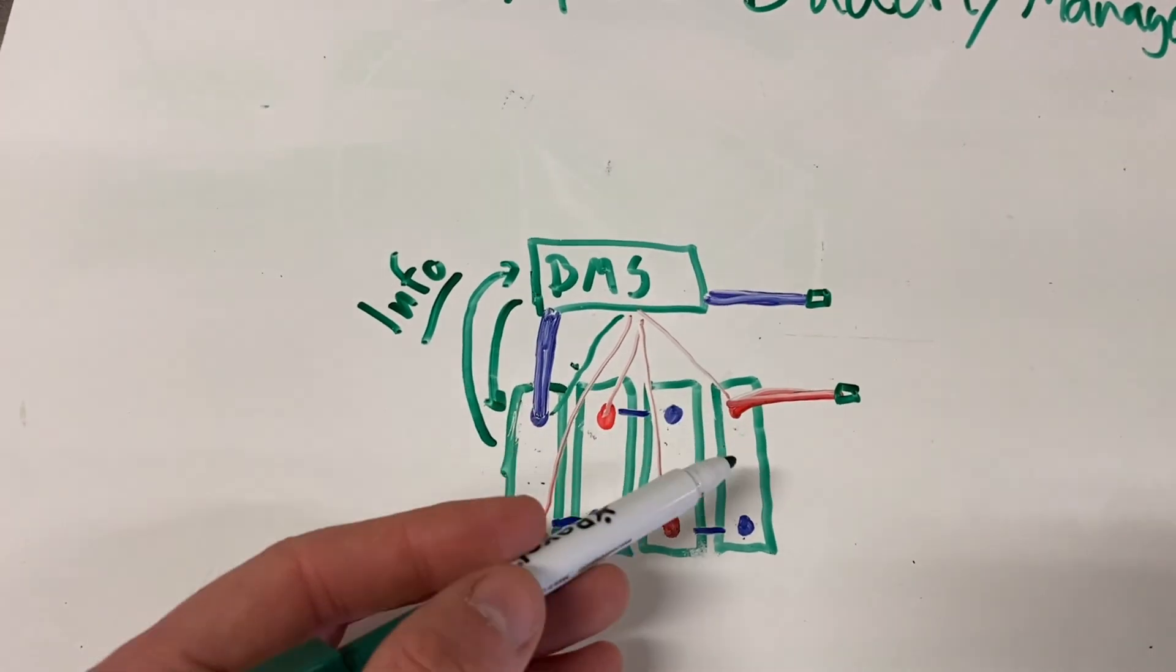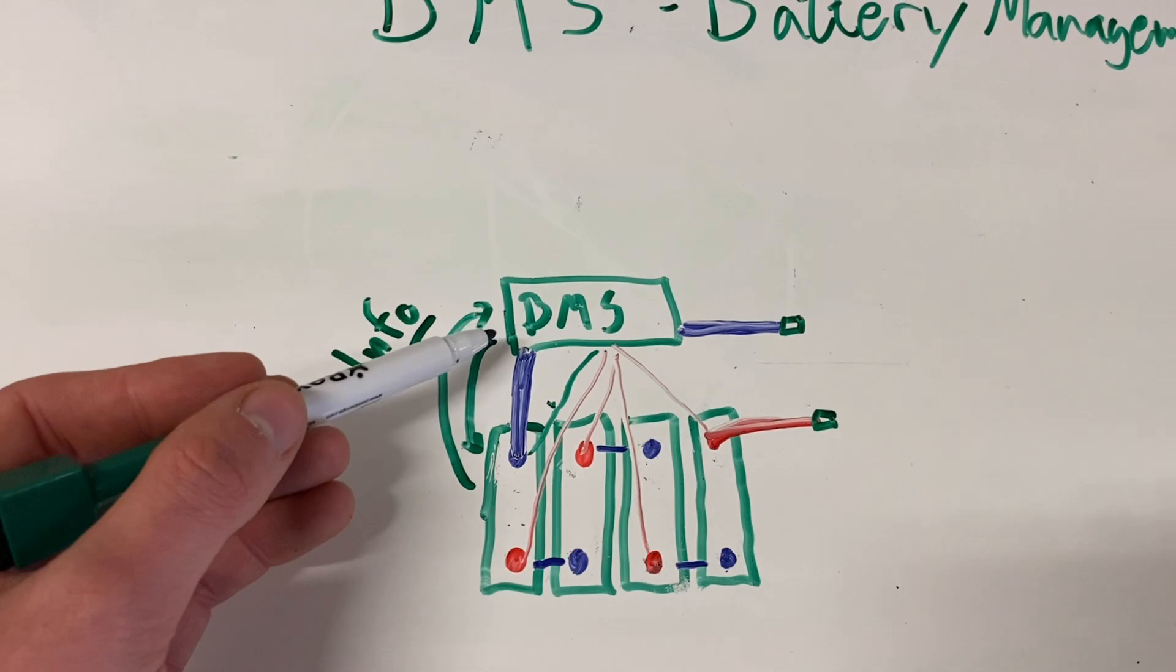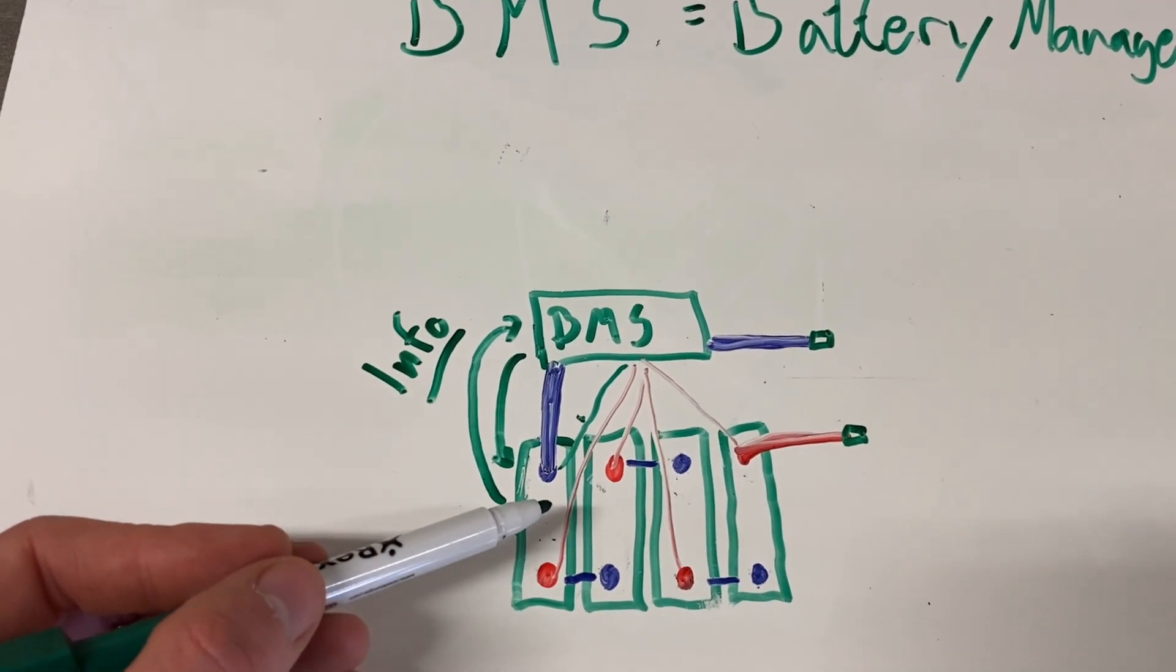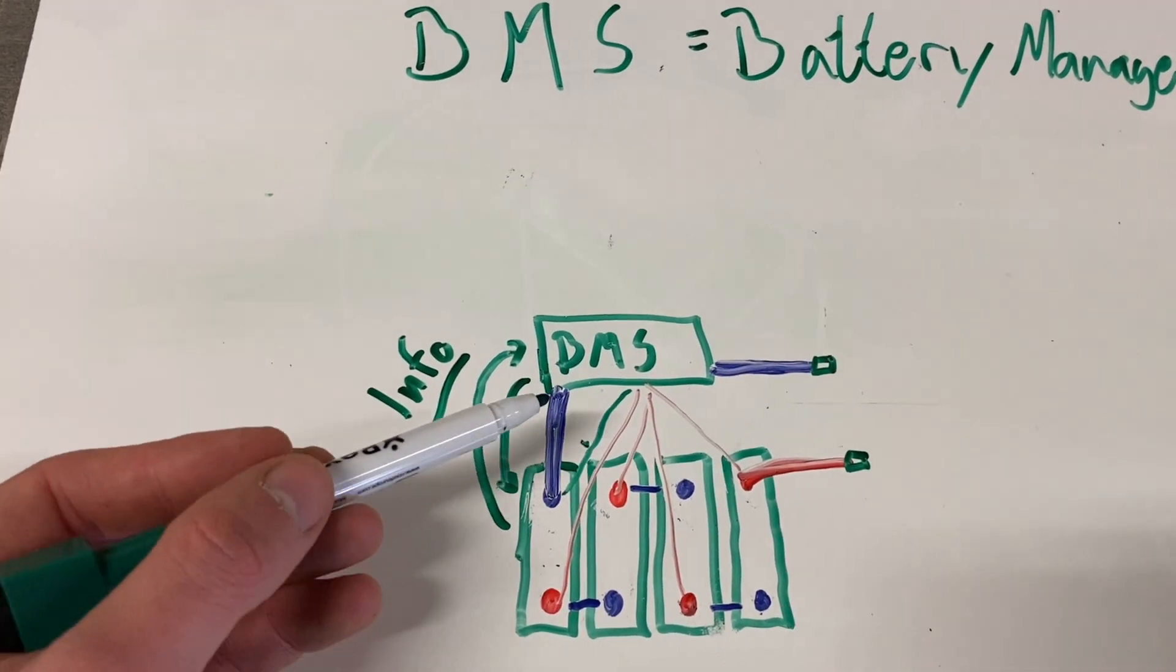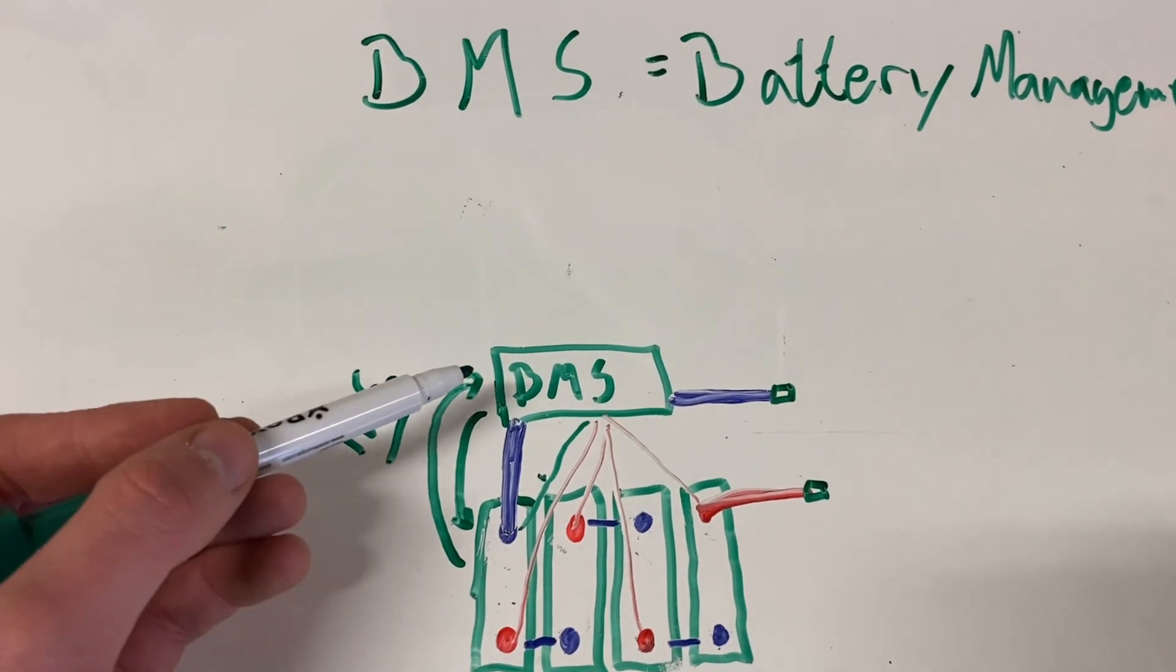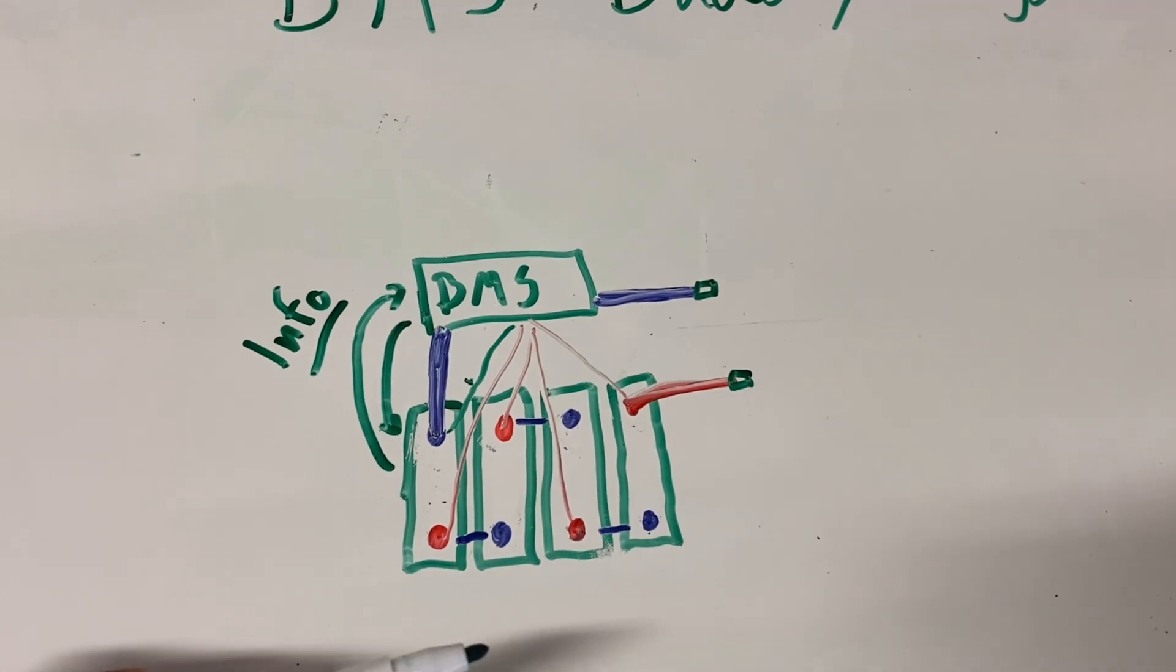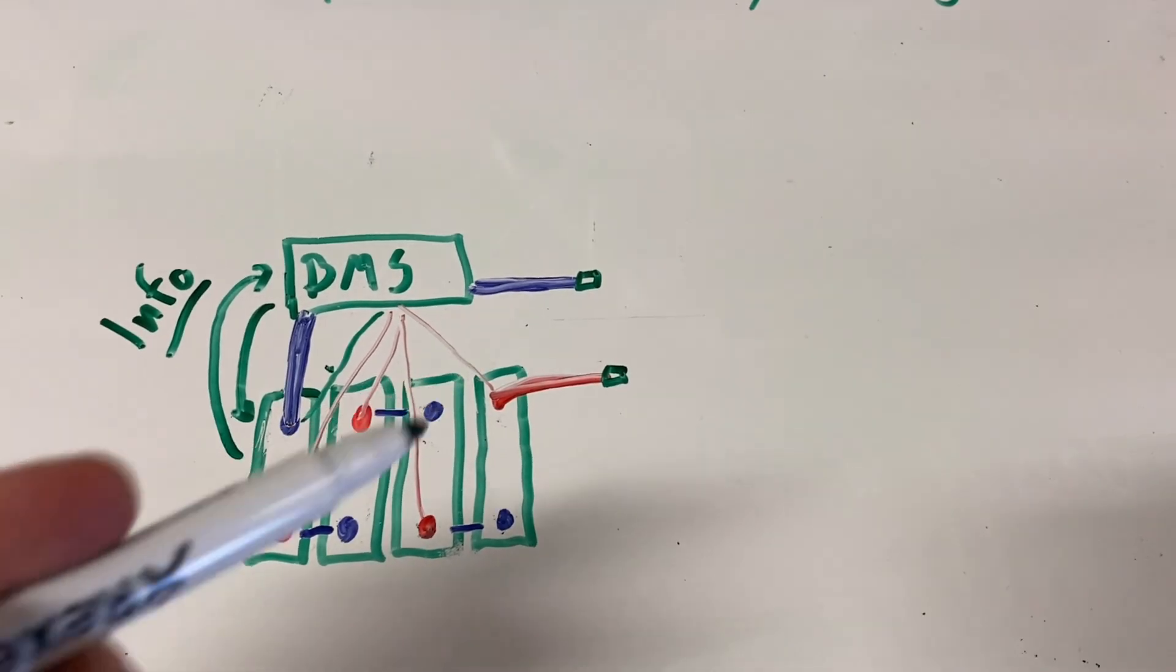Main negative and your main positive. The BMS reads the information coming from the cells, the temperature of the entire battery, and it makes a decision based on the data gathered.